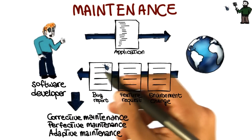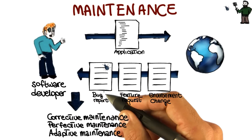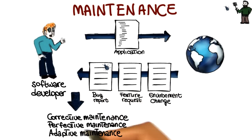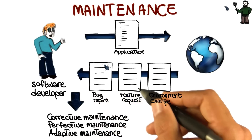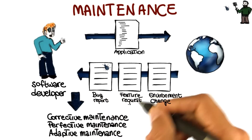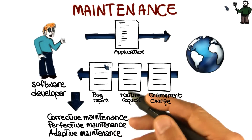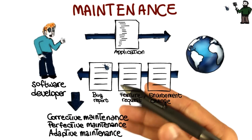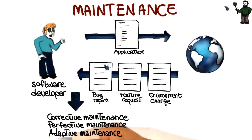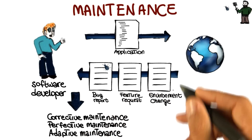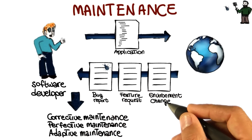Corrective maintenance, to eliminate problems with the code. Perfective maintenance, to accommodate feature requests, and in some cases just to improve the software — for example, to make it more efficient. And finally, adaptive maintenance, to take care of environment changes.